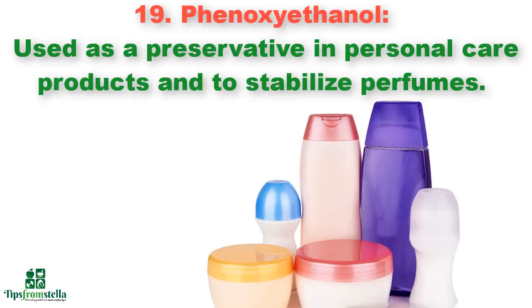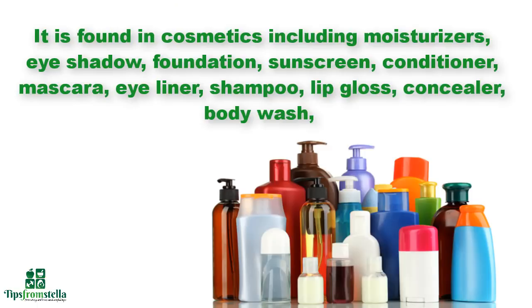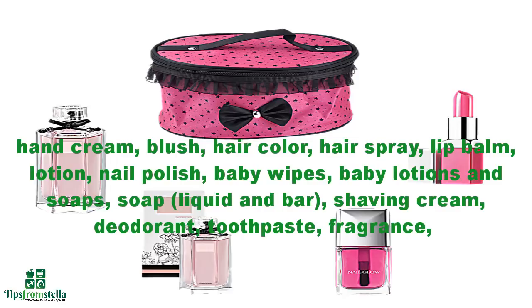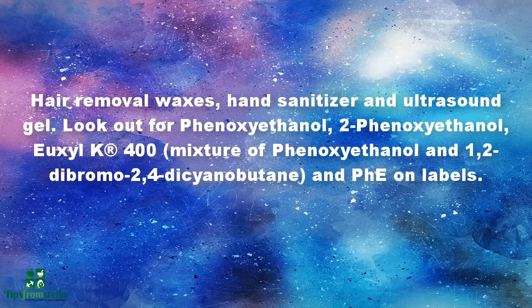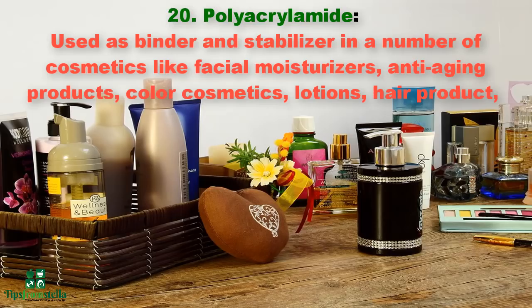Number nineteen: phenoxyethanol. Used as a preservative in personal care products and to stabilize perfumes. Found in cosmetics including moisturizers, eyeshadow, foundation, sunscreen, conditioners, mascaras, eyeliners, shampoos, lip gloss, concealers, body wash, hand cream, blush, hair color, hair spray, lip balm, lotion, nail polish, baby wipes, baby lotions, soaps, shaving cream, deodorant, toothpaste, fragrance, hair removal waxes, hand sanitizers, and ultrasound gels. Look out for phenoxyethanol, 2-phenoxyethanol, and euxil K 400 on labels.